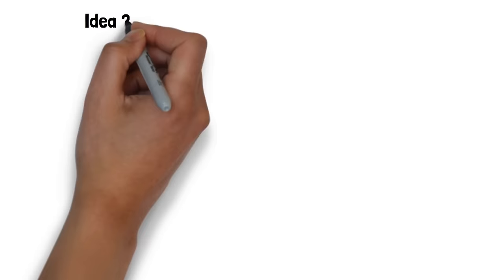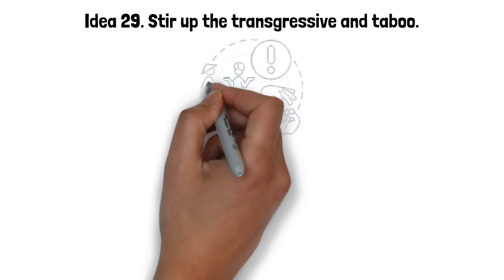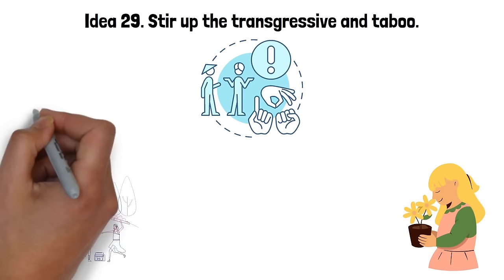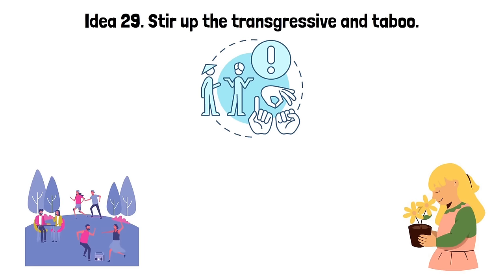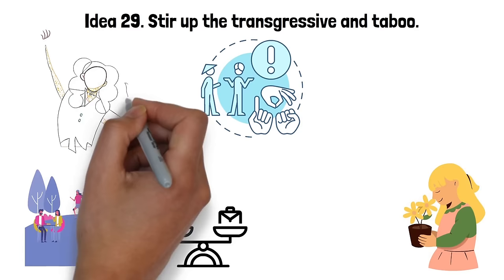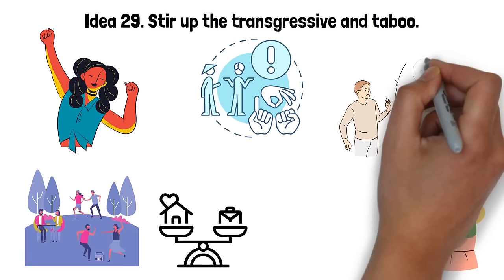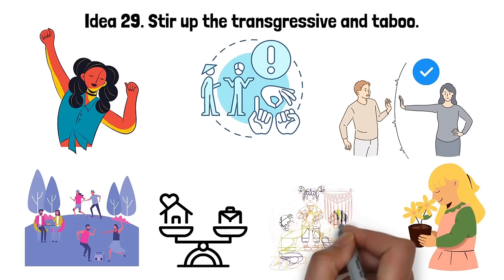Idea 29. Stir up the transgressive and taboo. Stirring up the transgressive and taboo involves inciting excitement and intrigue by breaking social norms or venturing into the forbidden. The allure lies in the thrill of the unknown or the forbidden fruit, which can stimulate a sense of novelty and adventure. This can range from innocent rule-bending, like a spontaneous late-night adventure, to exploring more profound societal taboos. The key is to maintain a balance, ensuring that the transgressions are enticing and exciting rather than threatening or disconcerting. Also, it's essential to respect personal boundaries and consent while delving into these territories. When done right, this strategy can inject an element of excitement and unpredictability into your interactions, making you more appealing and irresistible.